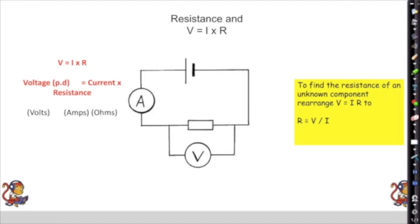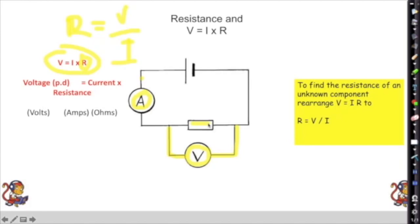To measure resistance, use V = IR, rearranged as R = V/I. You can't measure resistance directly — you need to set up a circuit. The ammeter must be placed in series with the circuit, while the voltmeter is placed in parallel across the component you're measuring. To find resistance of an unknown component, rearrange V = IR to R = V/I. Resistance is measured in ohms, current in amps, and voltage in volts.